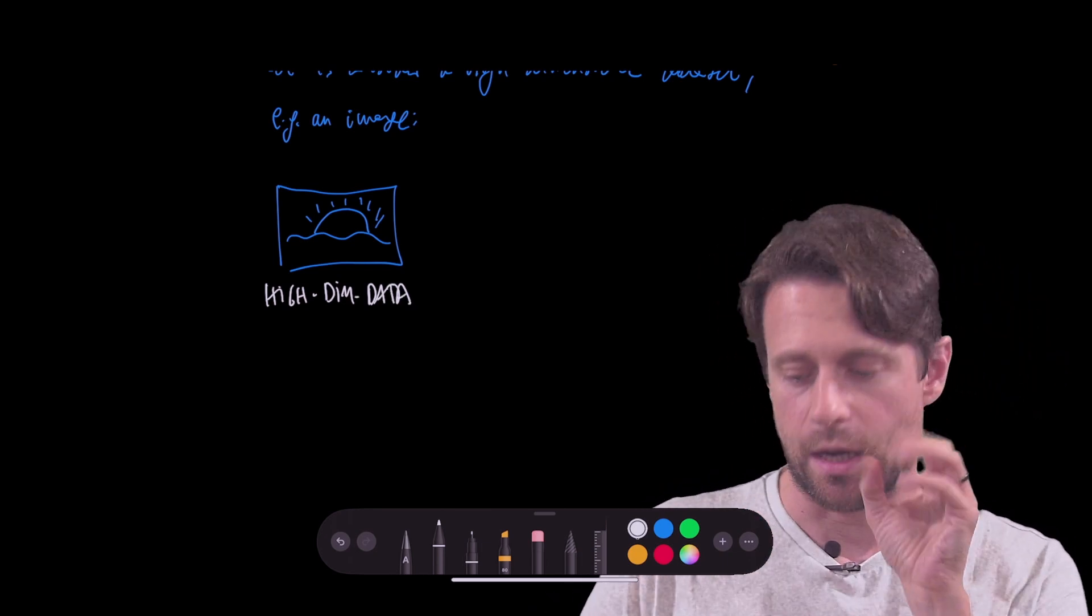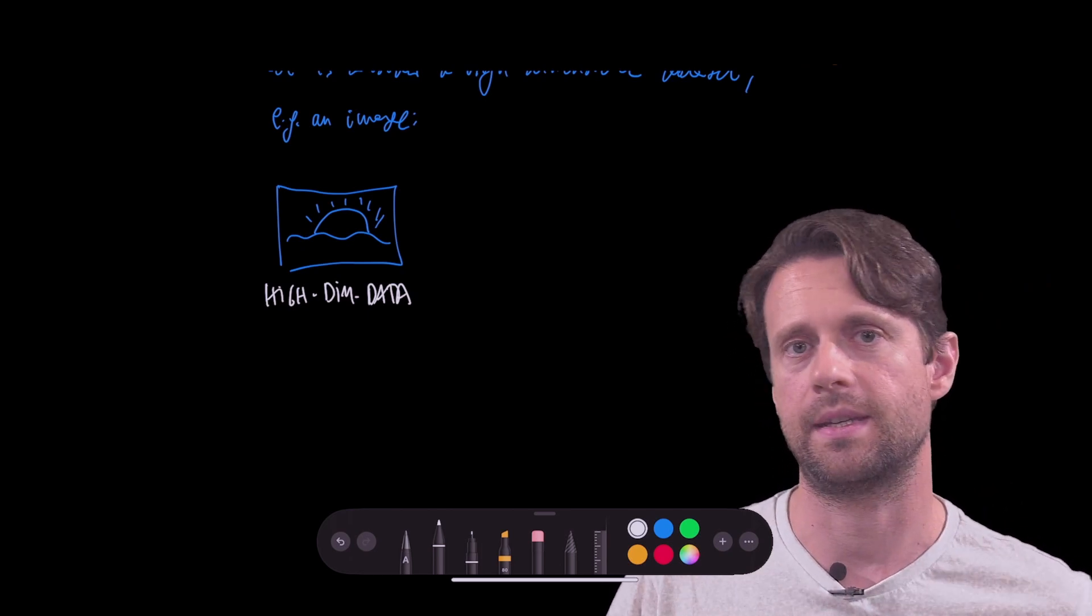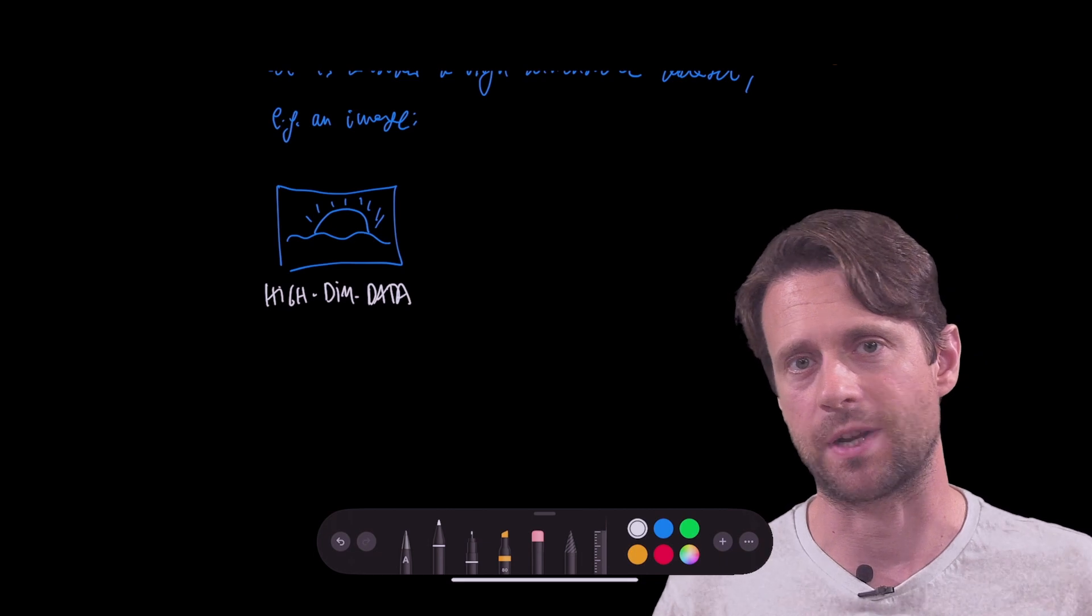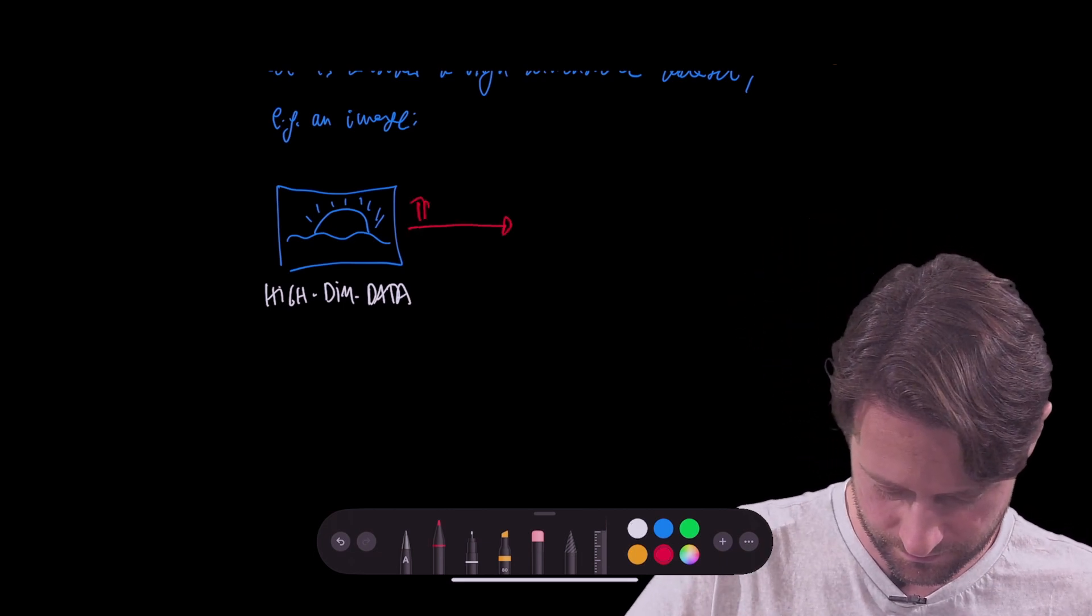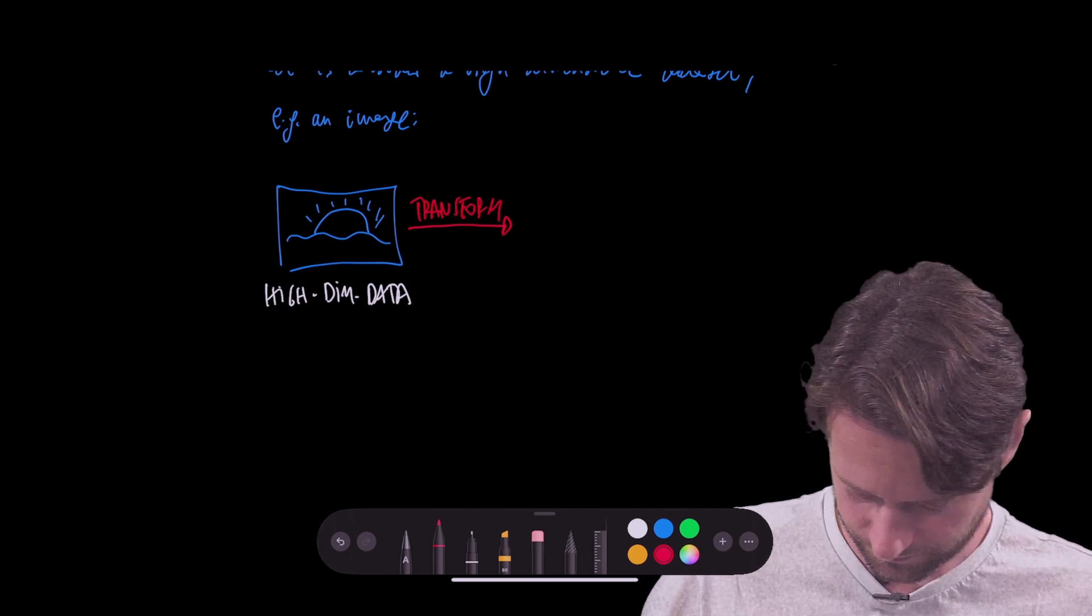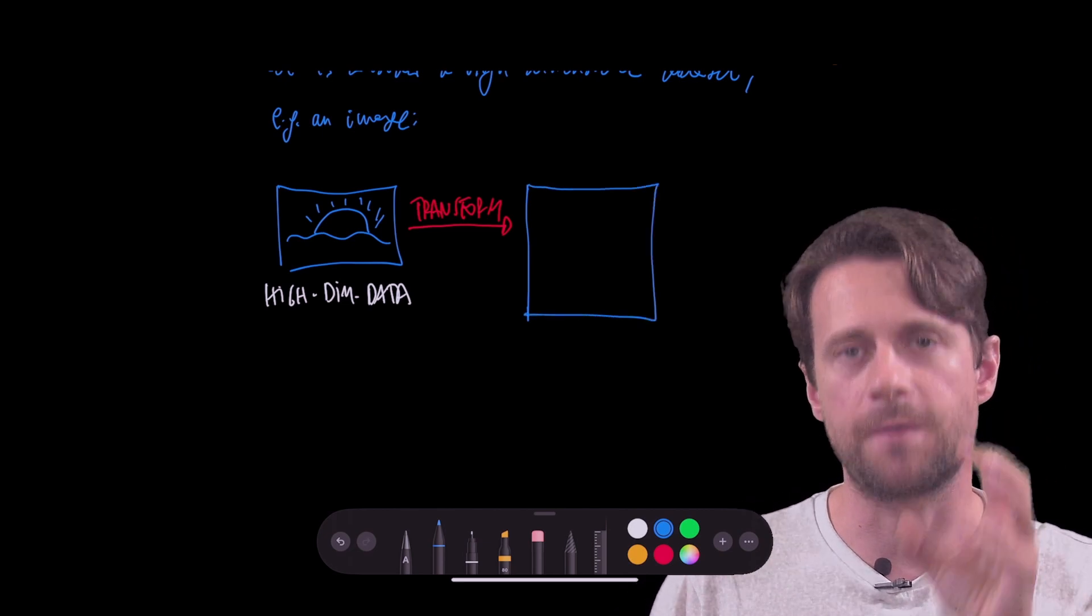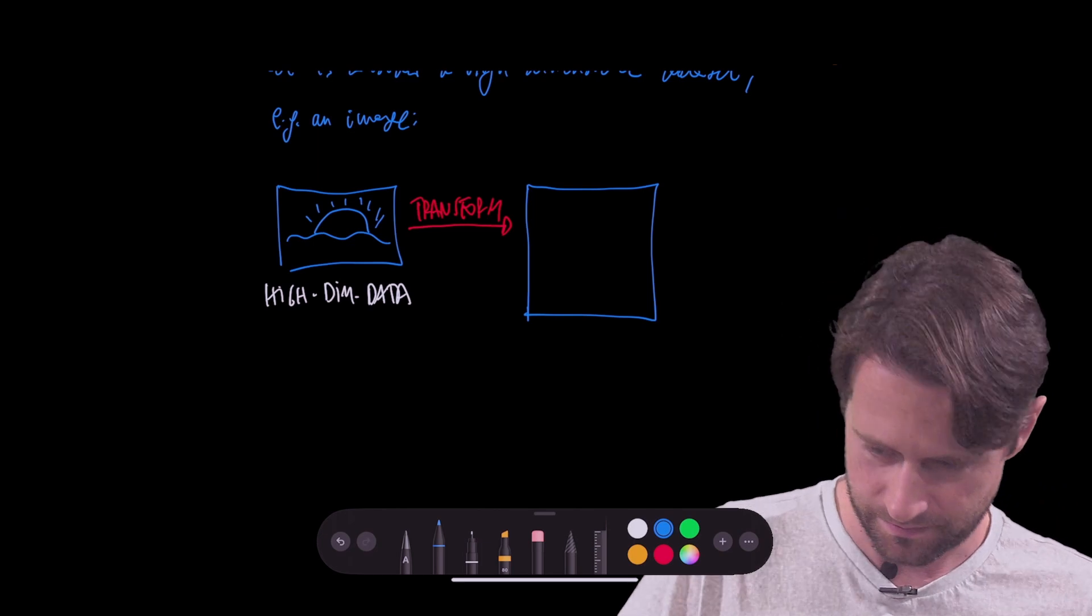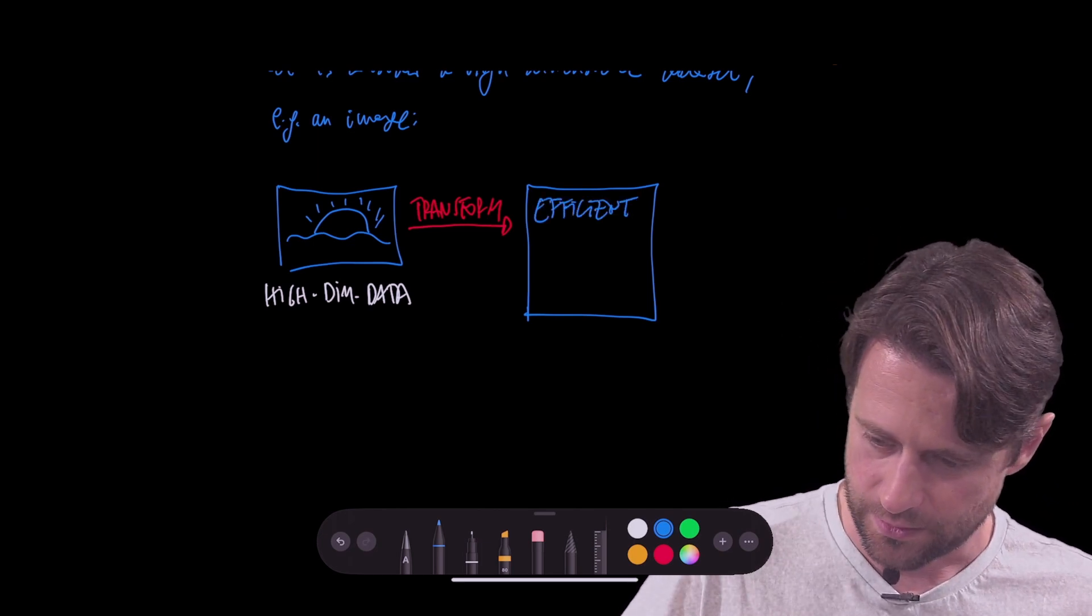Now let's think of a way to hopefully transform this image in some manner that can be efficient for us, that can be helpful for us. So let's try to transform it and try to come up with some efficient representation of this high dimensional image.